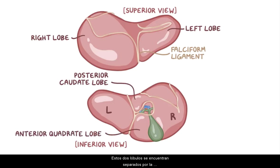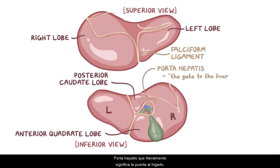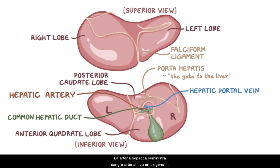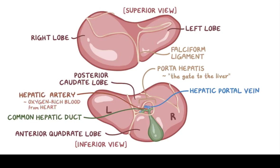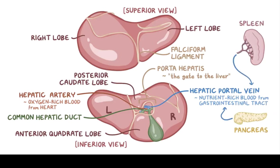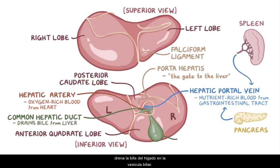These two lobes are separated by the porta hepatis, which literally means the gate to the liver. The porta hepatis contains the hepatic artery, the hepatic portal vein, and the common hepatic duct. The hepatic artery delivers oxygen-rich arterial blood from the heart to the liver, while the hepatic portal vein delivers nutrient-rich venous blood from the gastrointestinal tract, but also from the spleen and pancreas. Lastly, the common hepatic duct drains bile from the liver into the gallbladder.